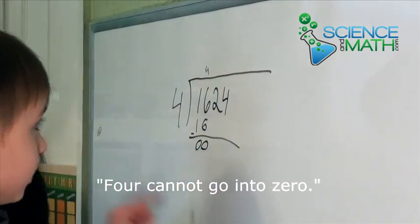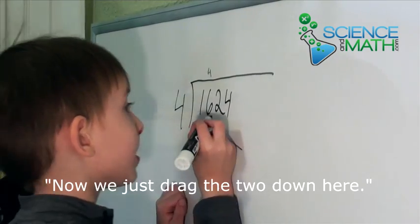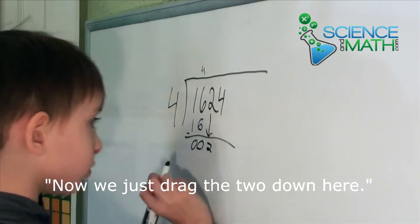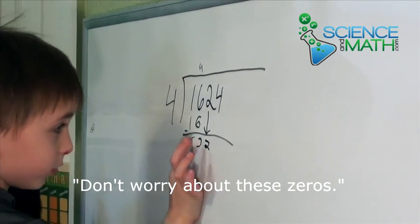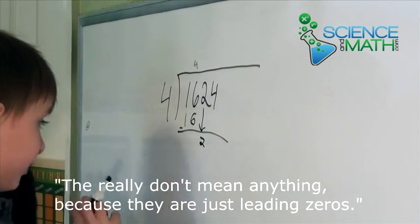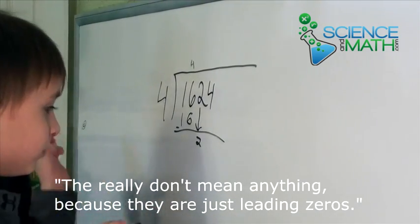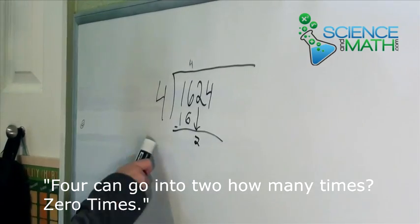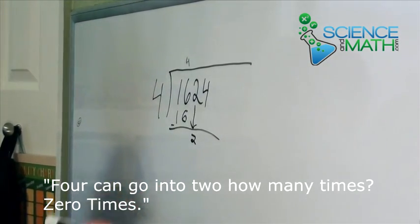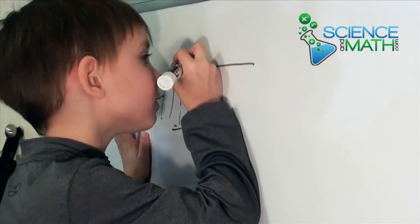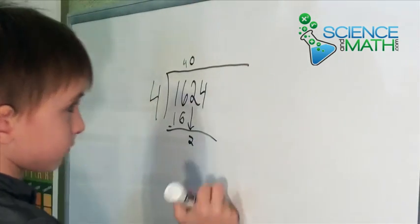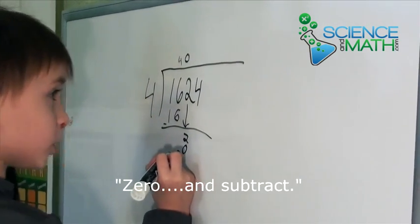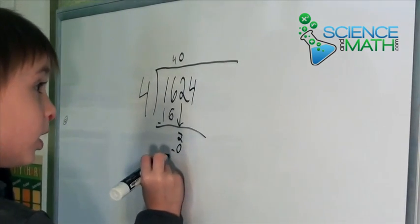Ok, now we're going to bring down the 0. There's a 2 here. Don't worry about these zeros — zeros really don't mean anything in this problem. We're going to see the rest of these zeros. And 4 can go into 2 how many times? 0 times.